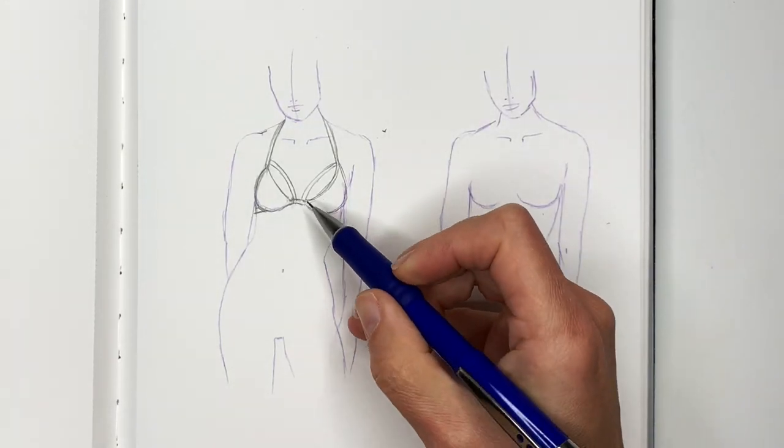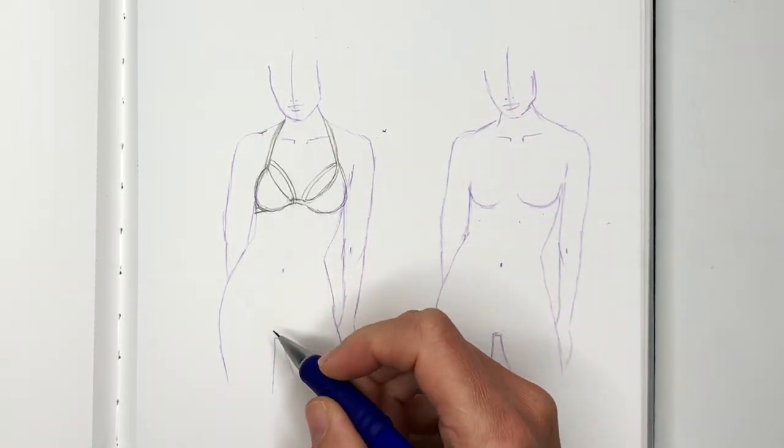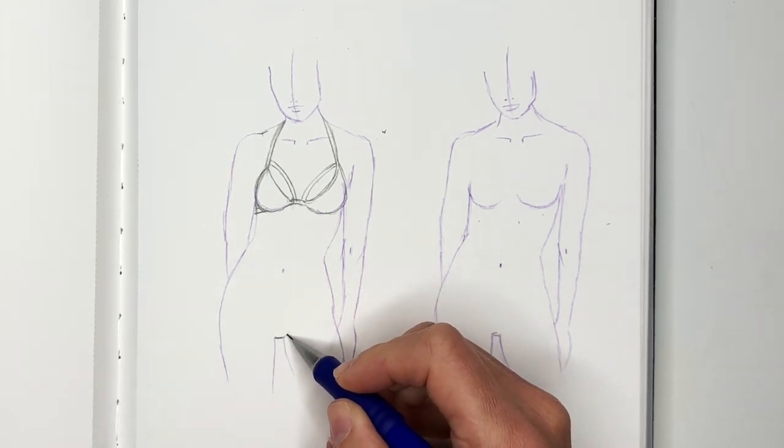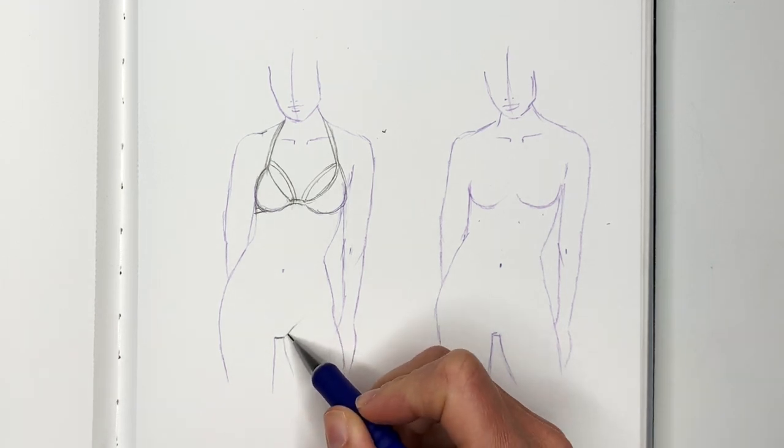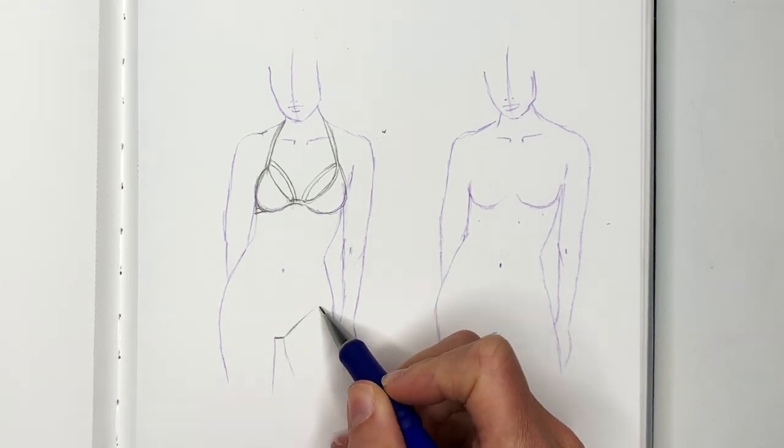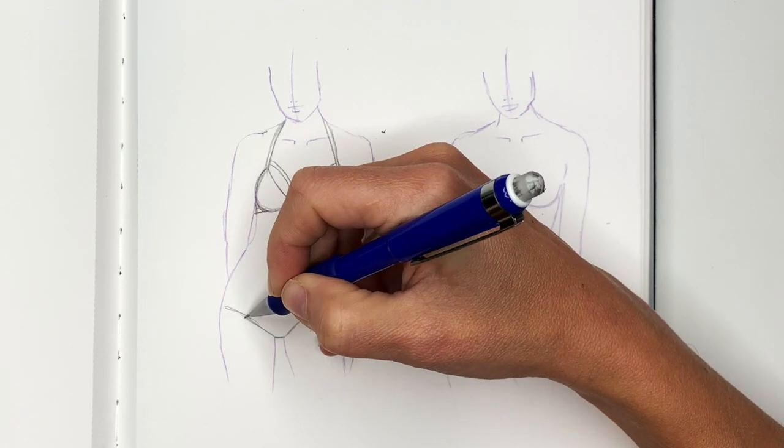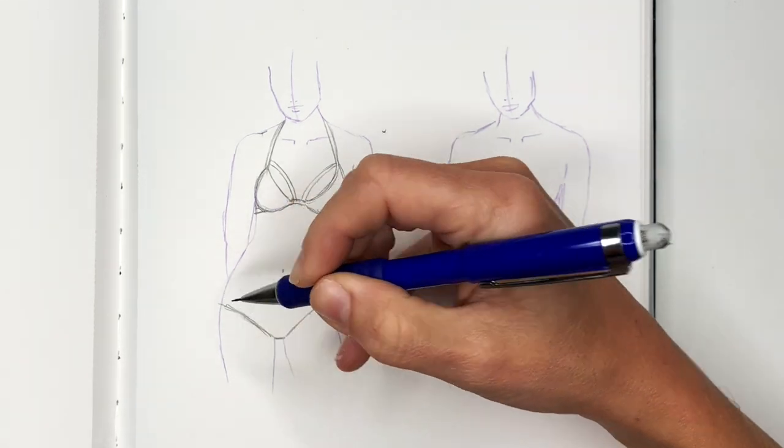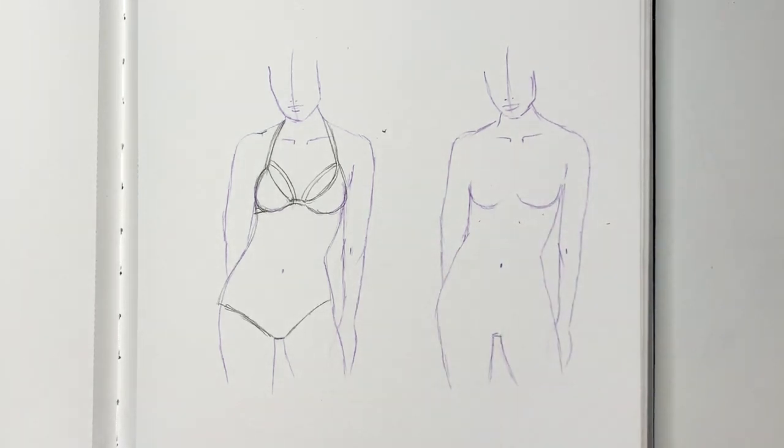Now depending on what you're drawing, if this is a one-piece bodysuit, you would draw the bottom. You can make it boy shorts, you can make a real high cut, or you can make it middle. I'm making mine pretty low. Then you can just trace the whole body and you have a one-piece bathing suit.